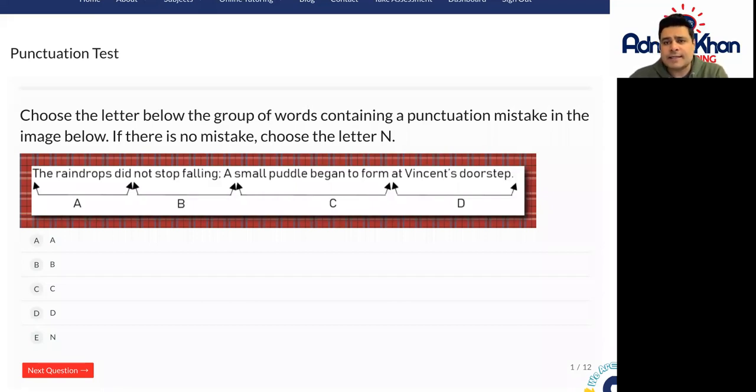But in this case, I can see a mistake in B. The mistake is that we have a semicolon here. A semicolon looks like this, with a dot and a small comma at the end.